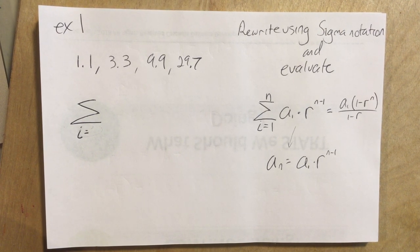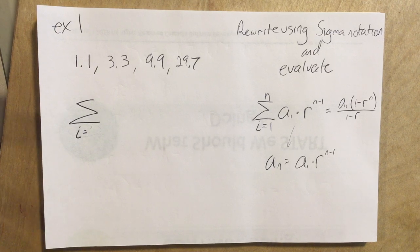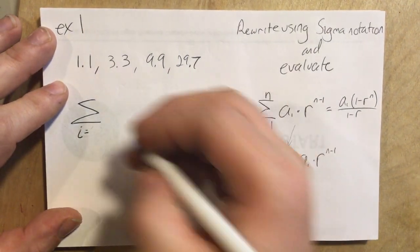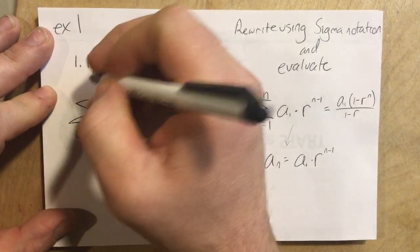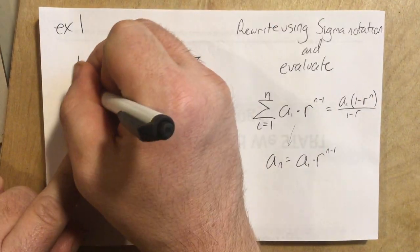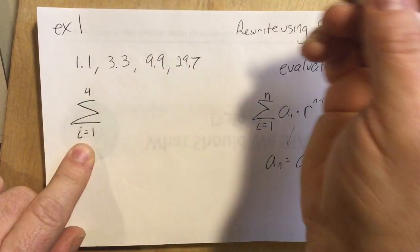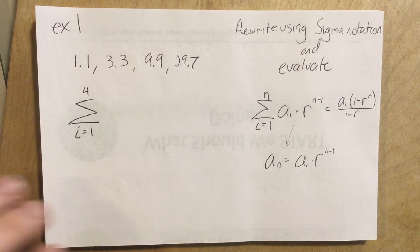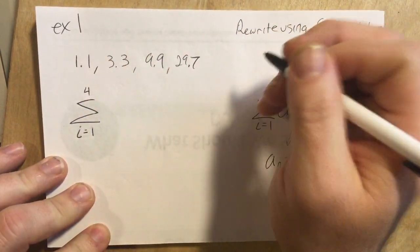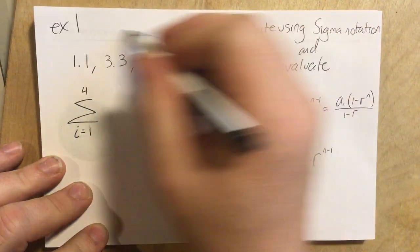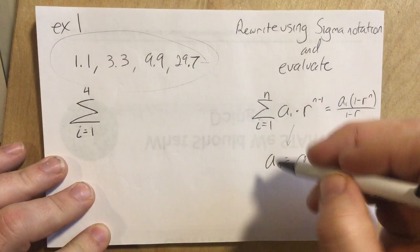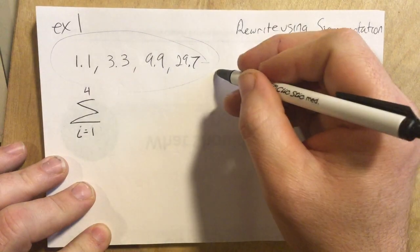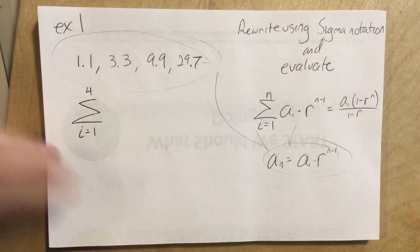So i sub 1 to i sub 4, or sorry, a sub 1 to a sub 4 is essentially what that means. Of what? Well, to write this in sigma notation, we kind of need to write this using the formula, right? But we can do that.